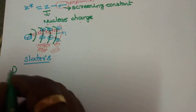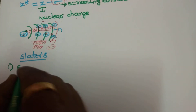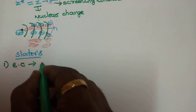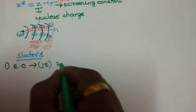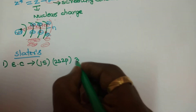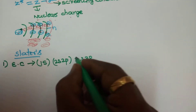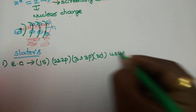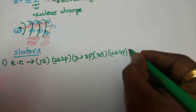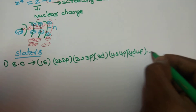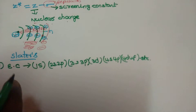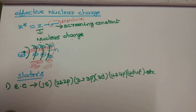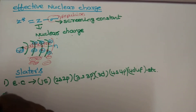The first rule: write the electronic configuration of the element in this order — 1s, 2s, 2p, 3s, 3p, 3d, 4s, 4p, 4d, 4f, and so on. The first step to calculate the screening constant or effective nuclear charge is to write the electronic configuration.